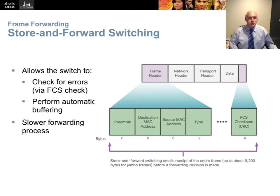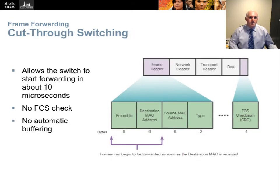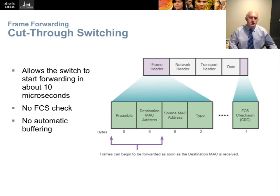To summarize: store-and-forward checks the CRC or FCS — remember it has two names, one for the field in the frame and one for the mathematical formula. Cut-through performs no CRC check, with about 10 microseconds of delay. It can't do any buffering or checking — it's sending out very quickly. There's a reason the destination address comes first in an Ethernet frame: so the information of where it's going is available as soon as possible, allowing the switch to begin forwarding immediately.